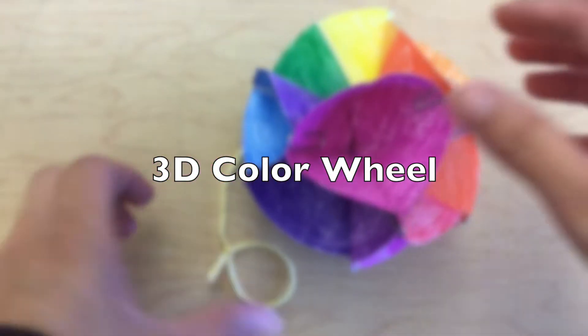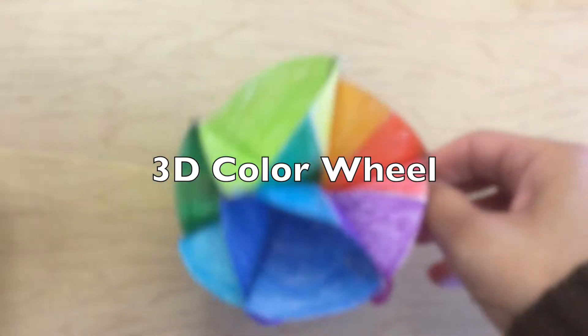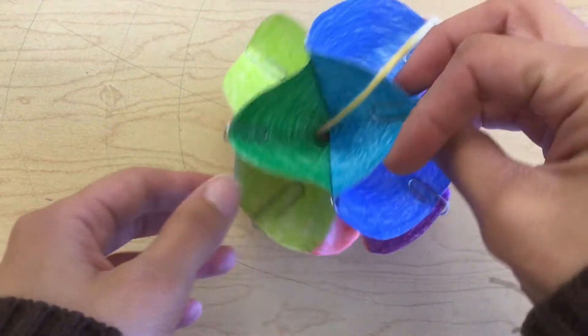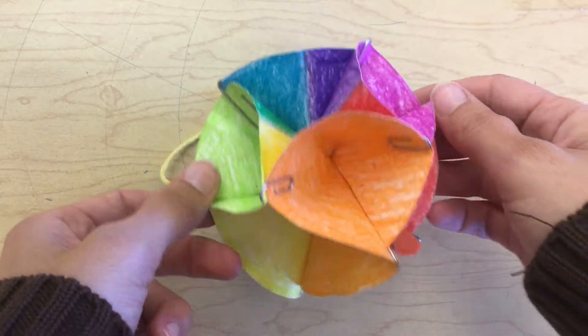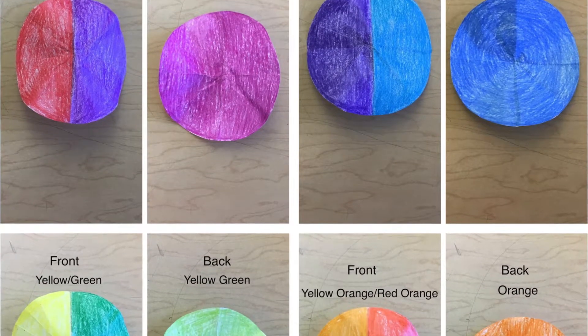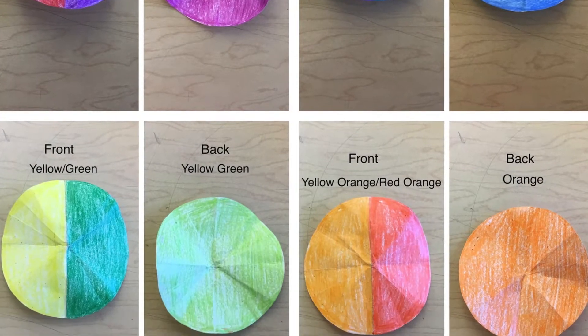Let's learn how to make a 3D color wheel. You will make four circles and each circle will have two sides.